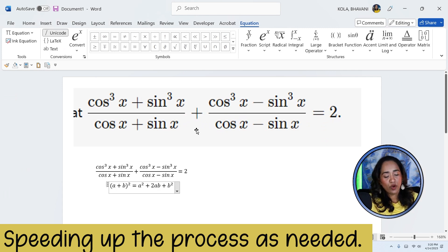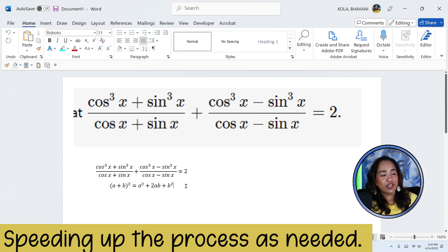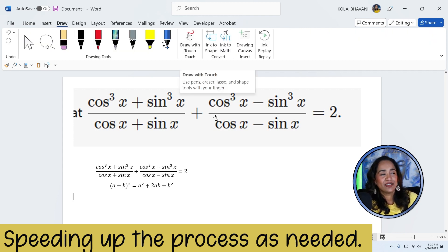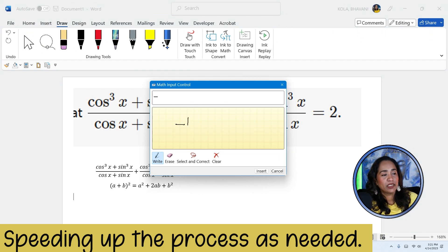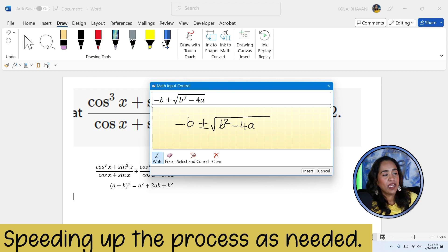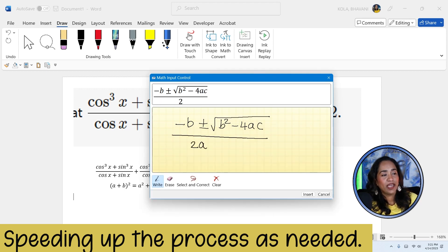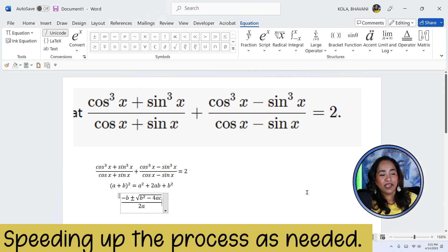Now let's go ahead and try some square root functions, just to make sure that it can still draw in. So again, click on draw ink to math. And here minus b plus or minus square root of b squared minus 4ac over 2a. And then I'm going to plug in insert.